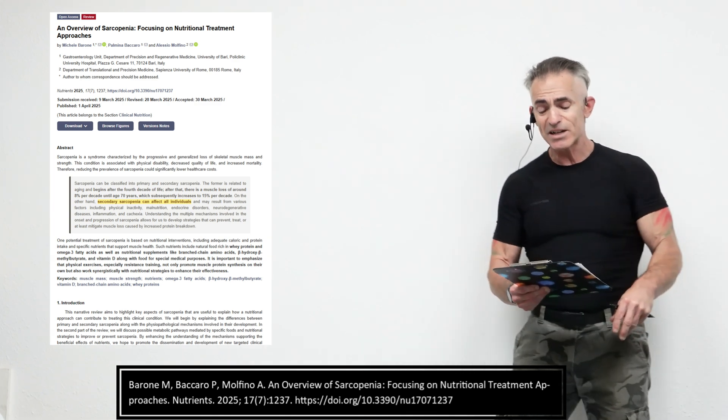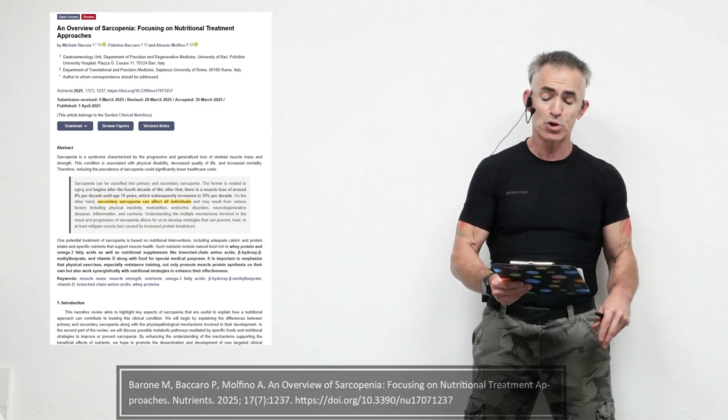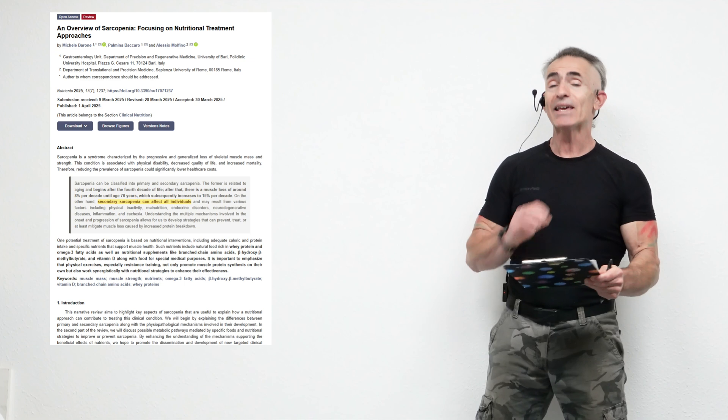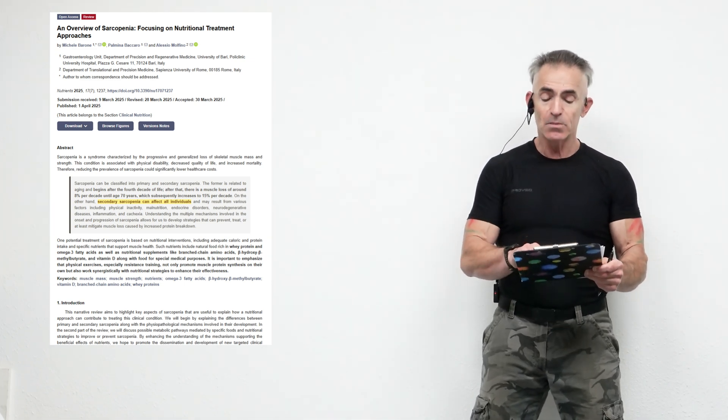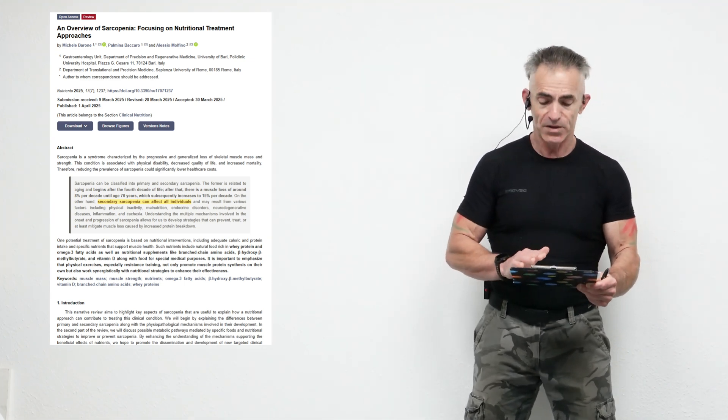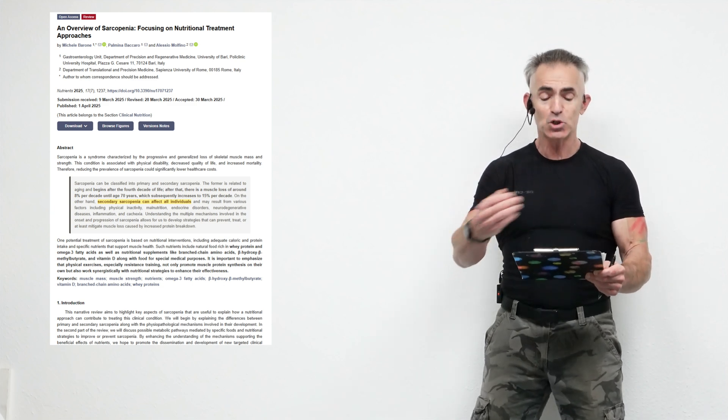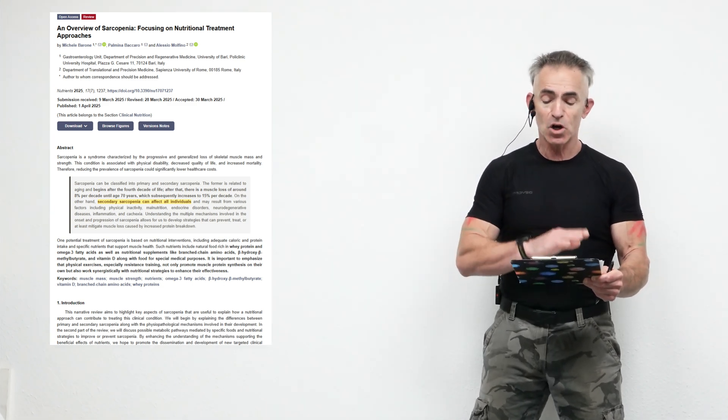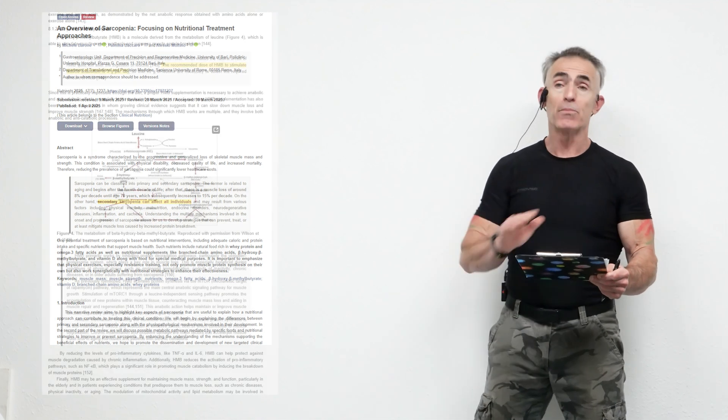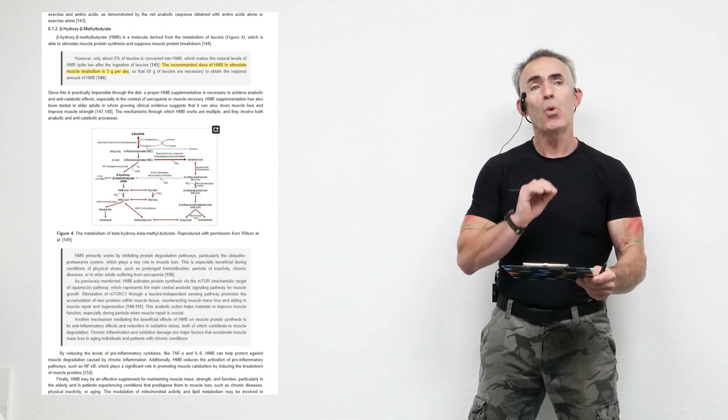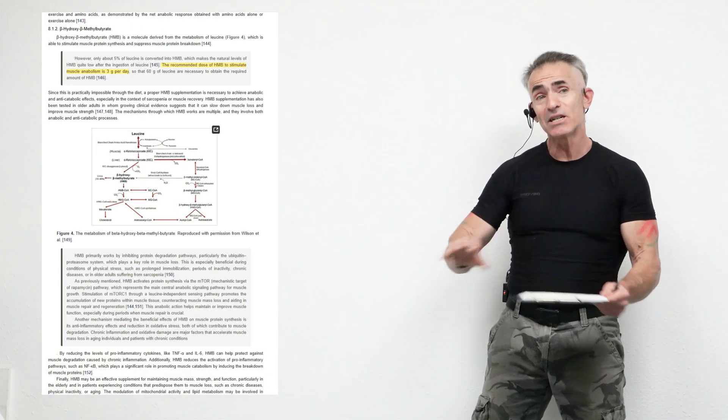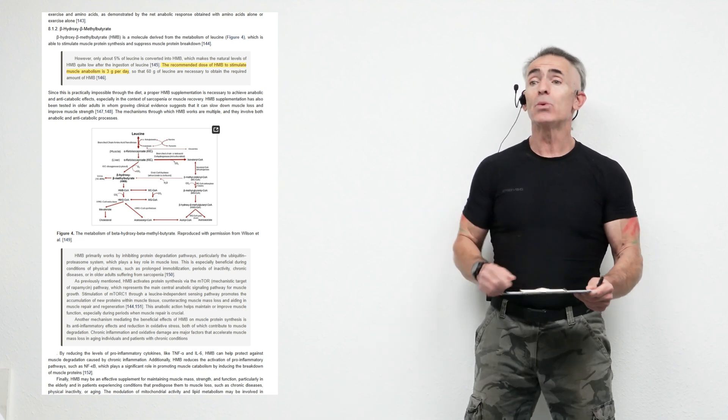It may result from various factors including physical inactivity, malnutrition, endocrine disorders, neurodegenerative diseases, inflammation, and cachexia. Understanding the multiple mechanisms involved in the onset and progression of sarcopenia allows us to develop strategies that can prevent, treat, or at least mitigate muscle loss caused by increased protein breakdown. Again, we're going to focus more on the supplements than actually the physical activity itself, although that is equally as important.